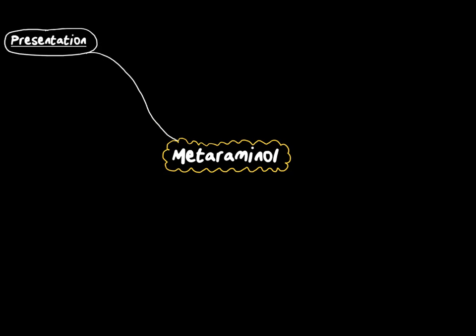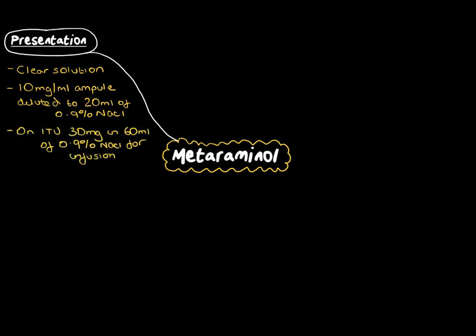Starting with presentation: it's a clear solution. It comes in an ampoule of normally 10 mg per ml, and that's often diluted up to 20 mL of 0.9% sodium chloride when used in anaesthesia. On the ITU, it's commonly diluted as 30 mg of metaraminol in 60 mL of 0.9% sodium chloride, which is often used as an infusion.